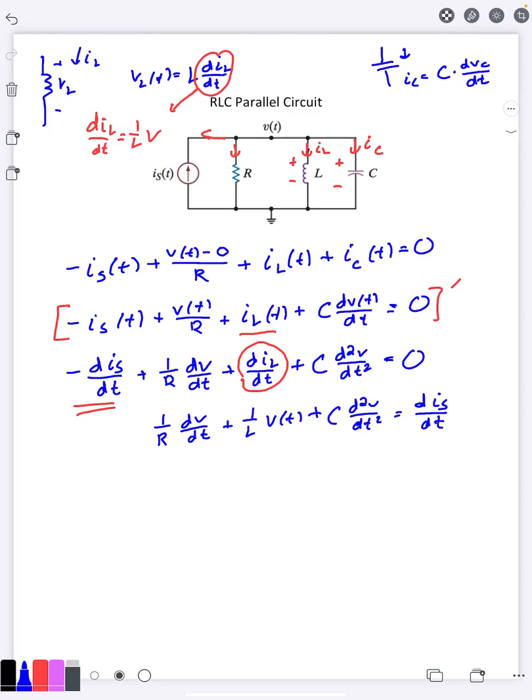And I'm just going to rearrange the order of the terms here and I'm going to use the prime notation because it looks a little nicer. I would have C v double prime plus one over R v prime plus one over L v is equal to is prime.